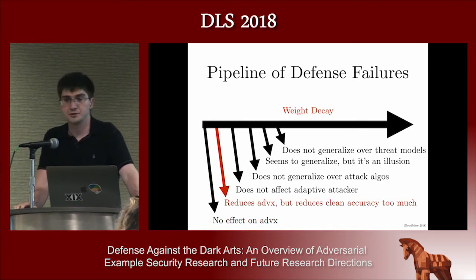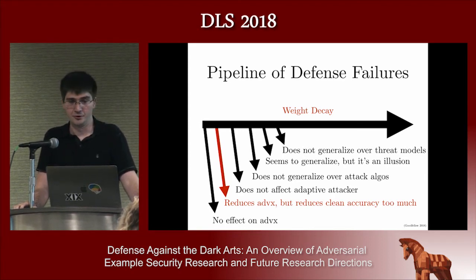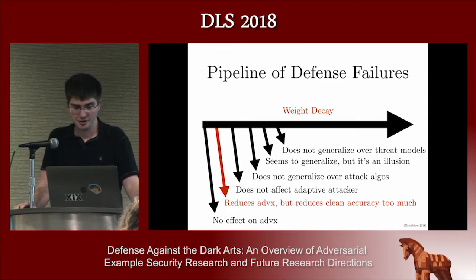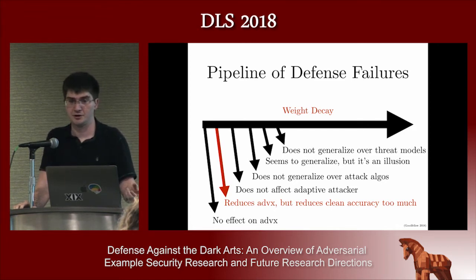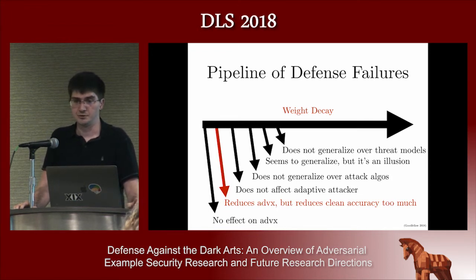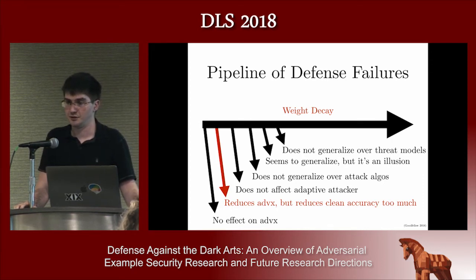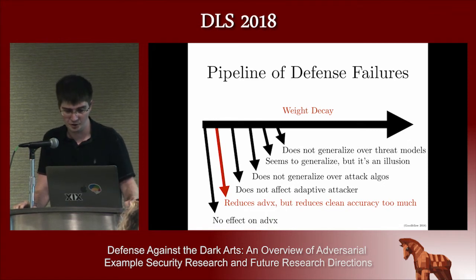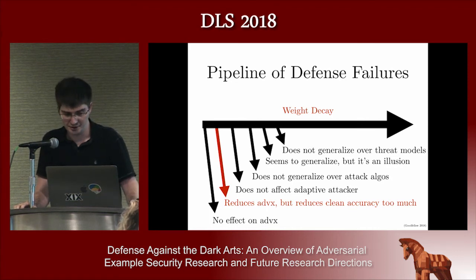We were still thinking about this from a regularization point of view, so we tried squared L2 weight decay. We found that if you turn up the coefficient a lot, you can eventually reduce the error rate on adversarial examples, but you also increase the error rate on clean examples a lot. For linear models, you can actually show analytically that you have to reduce the slope of the linear model so much that you can't fit the clean data anymore. That claim is problem-dependent — it depends on the margin in your dataset — but for MNIST you can show it. Later, I tried L1 weight decay but the same thing happened: if you make the coefficient big enough to affect adversarial examples, you lose a lot of clean accuracy.